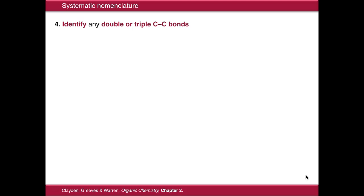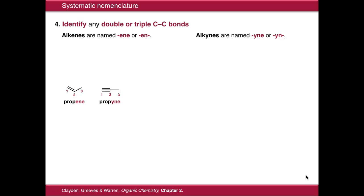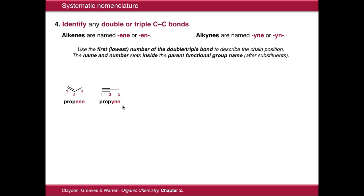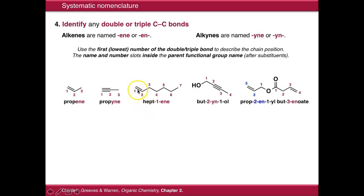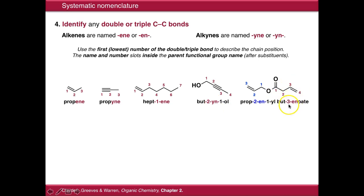The fourth stage is to identify any double or triple carbon-carbon bonds. Alkenes are named -ene if at the end of the molecule, or -en- if they're in the middle. Alkynes are named -yne or -yn-. So this is propene and this is propyne. If we have to identify the position of the alkene or alkyne using numbers, it is the lowest number of the double or triple bond which assigns the chain position. So in this case, the carbon-carbon double bond runs between carbons 1 and 2, but it's hept-1-ene because starting from this end of the chain the alkene starts on carbon number 1. If we look at but-2-yn-1-ol, we're numbering 1, 2, 3, 4 — the alkyne starts on carbon 2 and runs to carbon 3, so it's but-2-yne. And over here the alkene starts on carbon 3, so it's but-3-enoate.